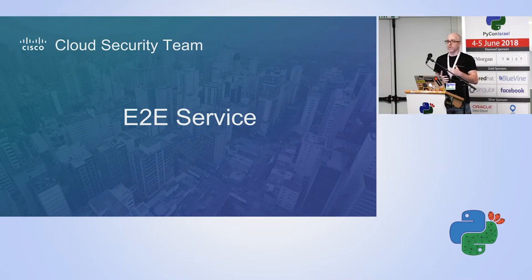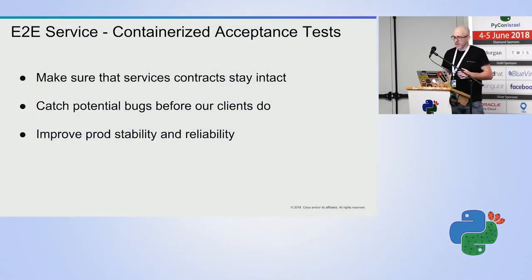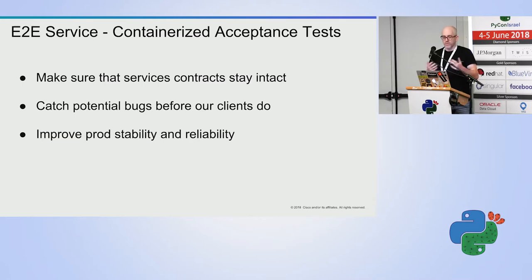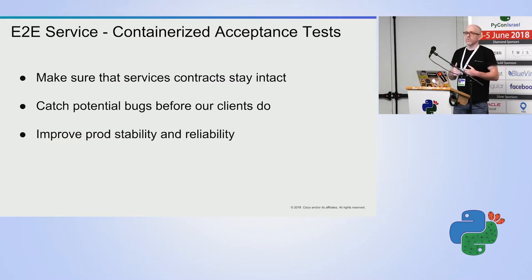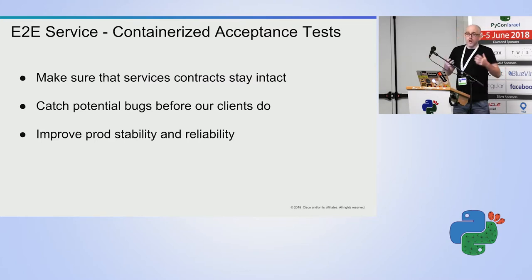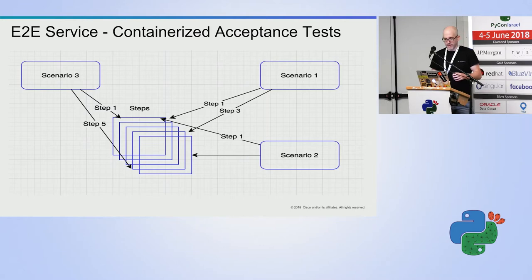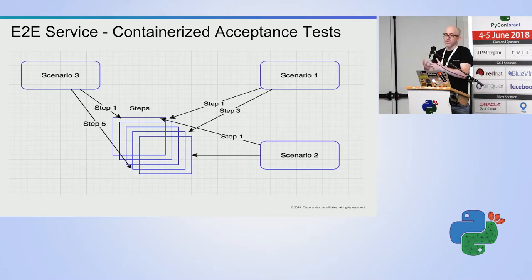Let's talk about another step in our continuous deployment pipeline. Moving toward continuous deployment, we needed a trustworthy barrier, so we decided to develop an end-to-end service. When we deploy or modify a feature, we want to make sure we don't break our service contracts, we want to catch potential bugs before our clients do, and we want to improve our production environment's stability and reliability.